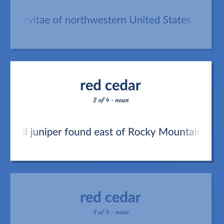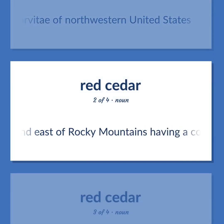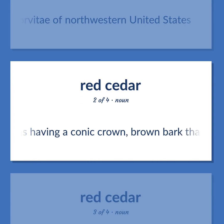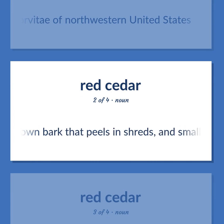Small juniper found east of the Rocky Mountains having a conic crown, brown bark that peels in shreds, and small sharp needles.